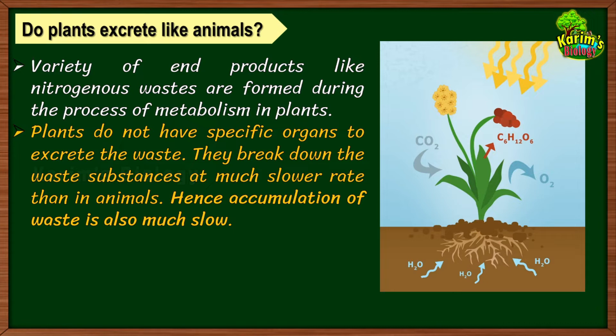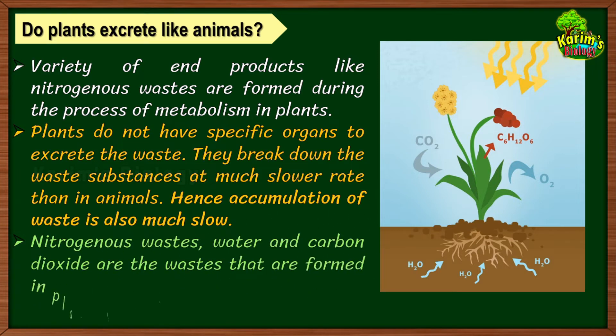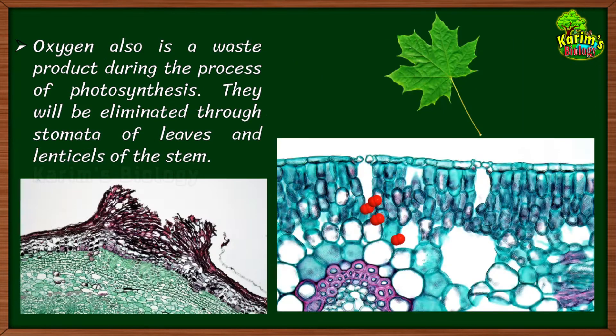When you talk about the rate of formation of waste material, animals are metabolically much more active than plants. Plants break down waste substances at a much slower rate than animals, so the accumulation of waste in plants is also very slow. The general wastes formed in plants are nitrogenous wastes, water, and carbon dioxide.